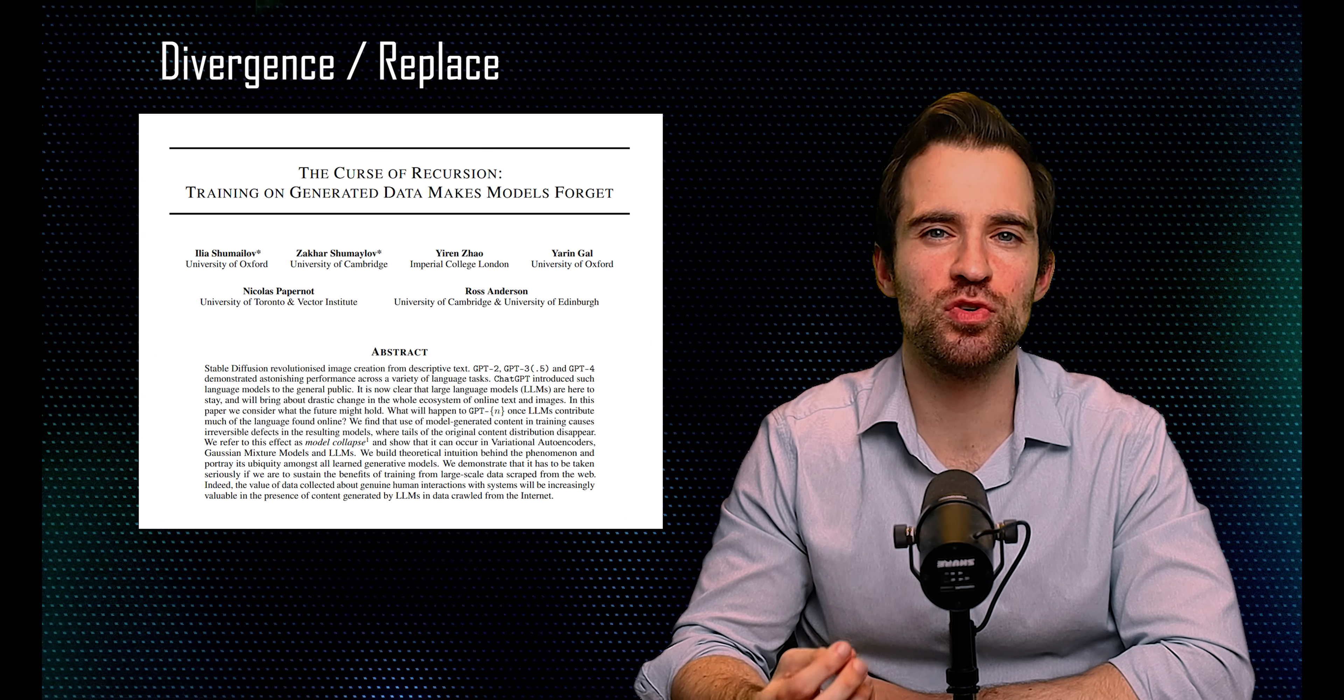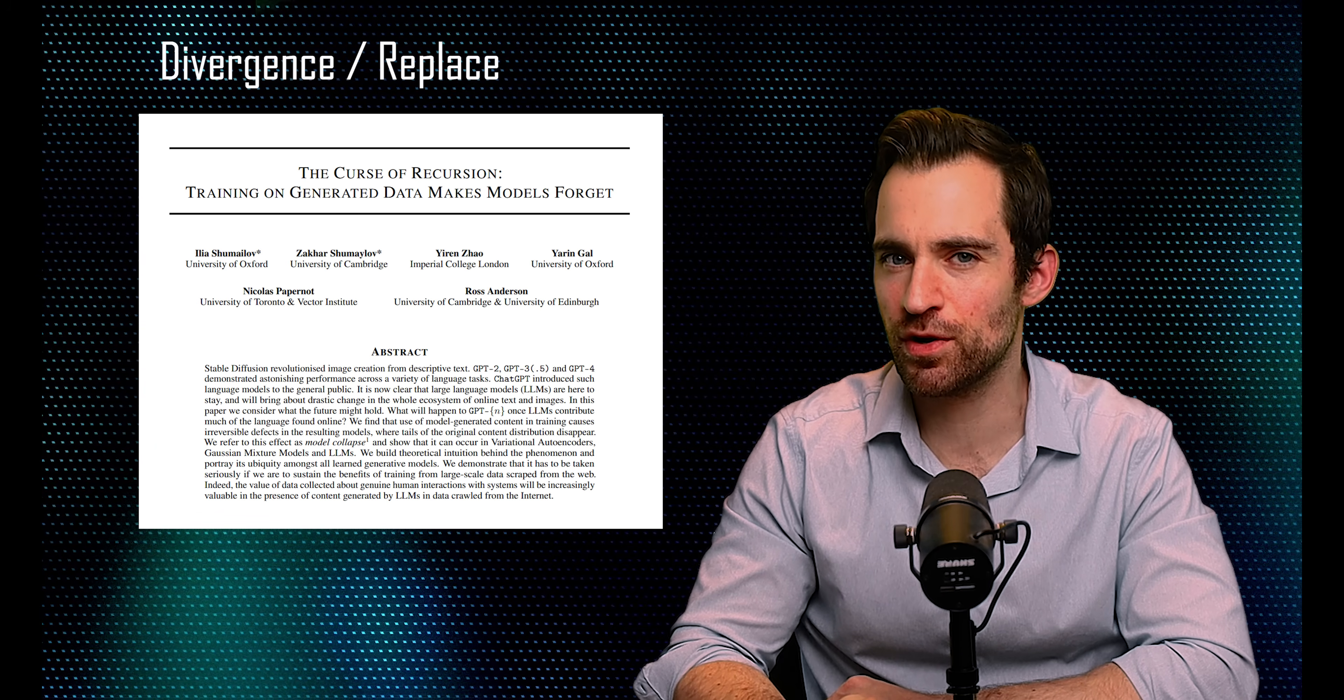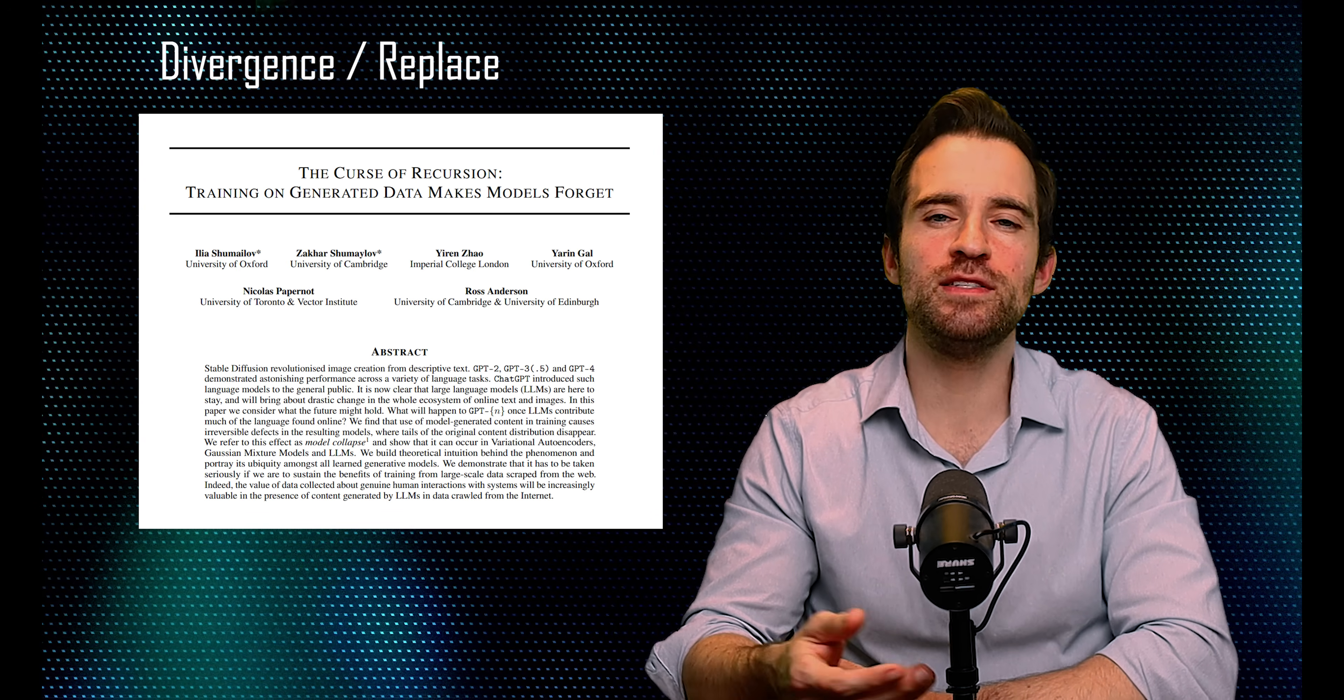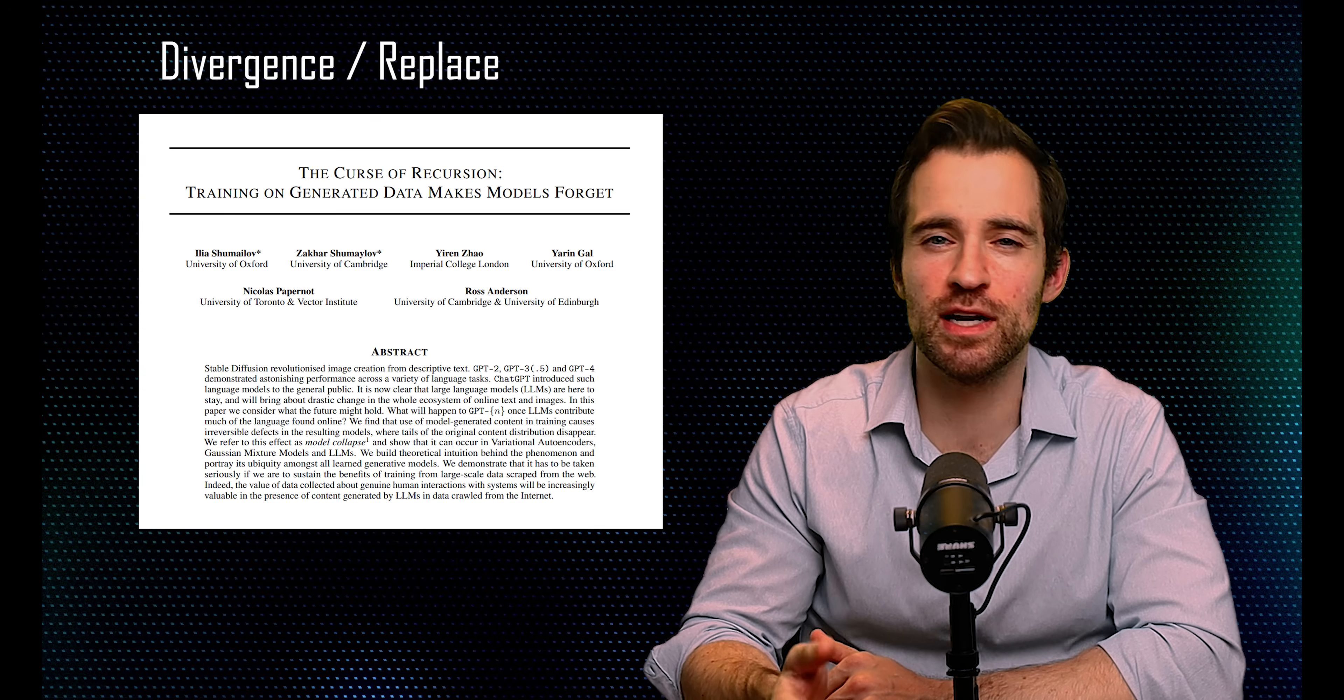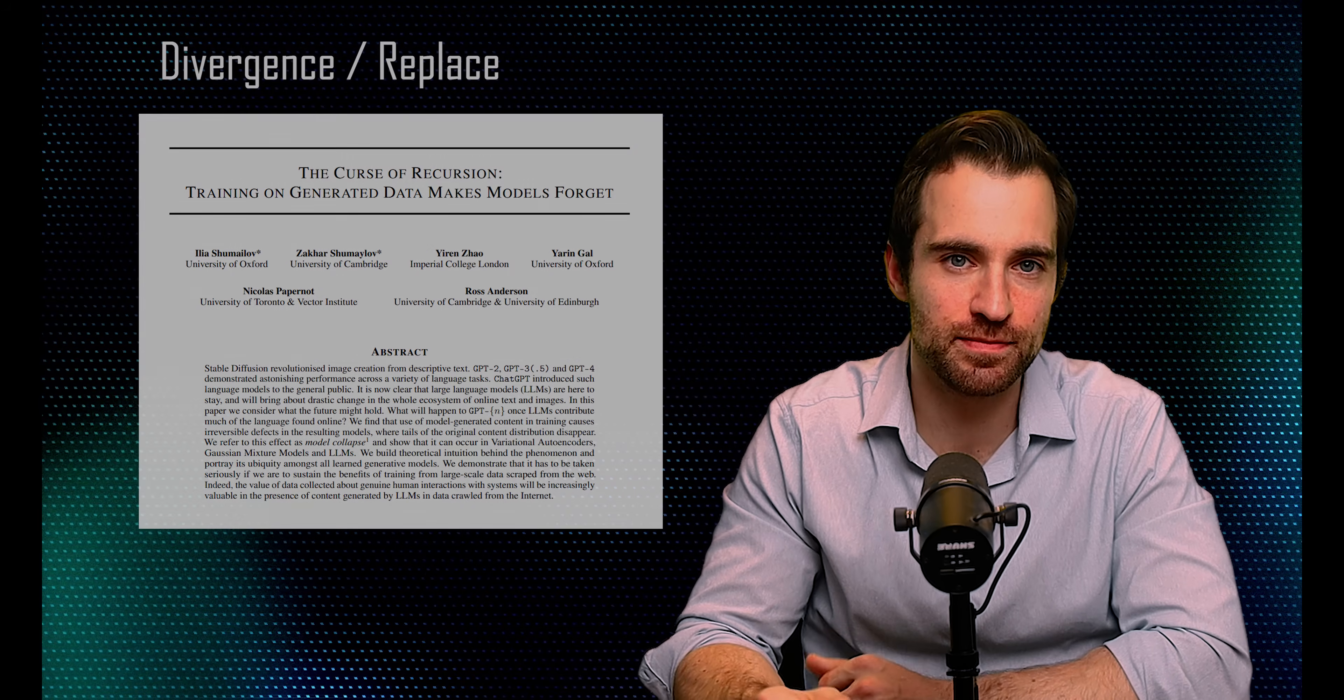The paper builds some intuition about this recursive training process using a toy case of a normal distribution, similar in spirit to the regression case I showed earlier. Essentially, they show that you get random walk behavior in your parameter estimates over time, which means they drift away from the ground truth data. Now, this is a toy case, but they argue this phenomenon is universal across models, whether they are language models or image generation models or something else.